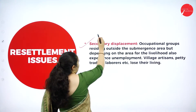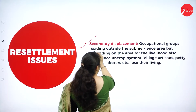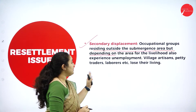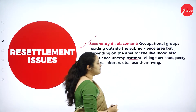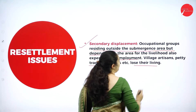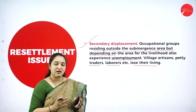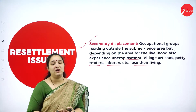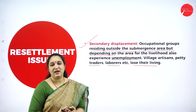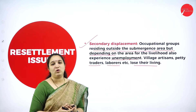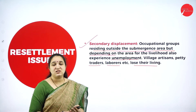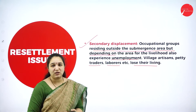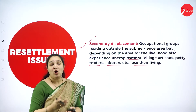Next is secondary displacement. Occupational groups residing outside the submergence area but depending on it for their livelihood experience unemployment. Village artisans, petty traders, and laborers lose their living. Suddenly displaced, they don't know what to do and lack both money and skill sets to make their livelihood in a different place.